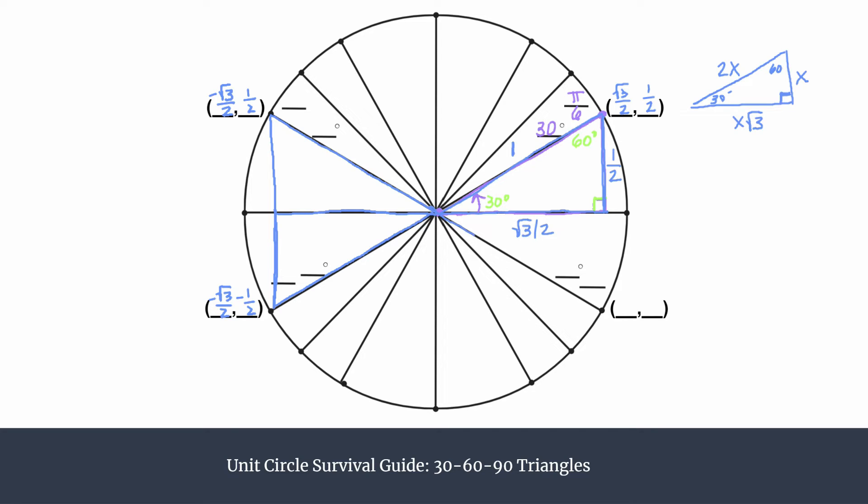All right, and similarly in the fourth quadrant, this triangle would show up, just flips upside down. And so we know that we are going in the positive direction for the x-coordinate and in the negative direction for the y-coordinate.